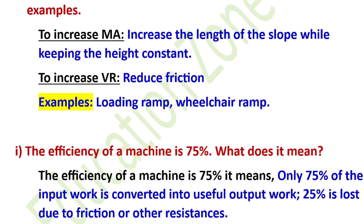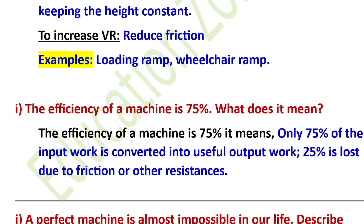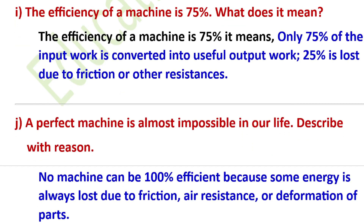The efficiency of a simple machine is 75% — this means 75% of the input work is converted into useful output work. The remaining 25% is lost due to friction and other resistances. A perfect machine is almost impossible in real life.